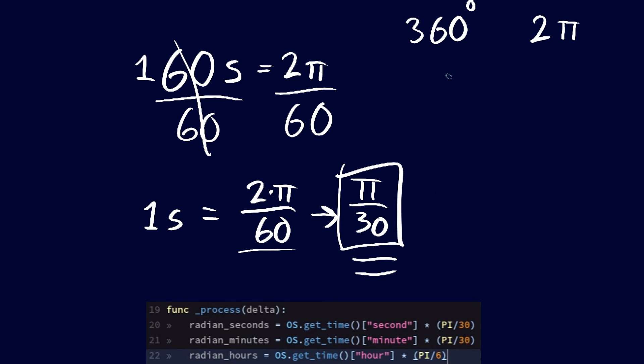Now this is exactly the same for minutes. Except you have a minute here. So we have pi divided by 30 for minutes as well. So what about hours?